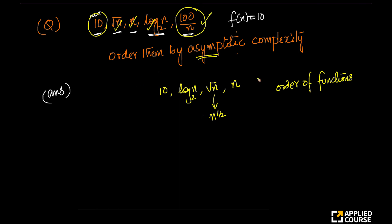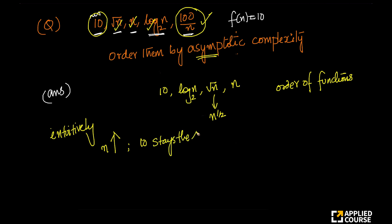Because we do not know where to place 100 by n. But if you think intuitively — I will also show you mathematically — as n increases, 100 by n will start reducing. Whether your n is 100 or 1000 or anything, if f of n equals 10, as n increases, 10 stays the same.